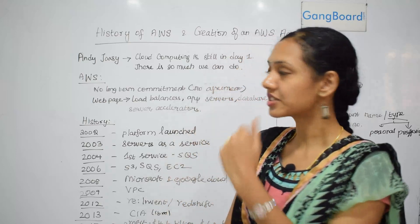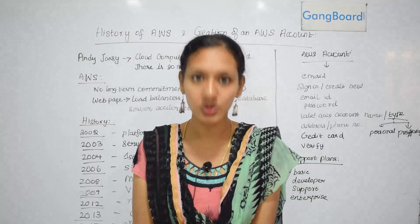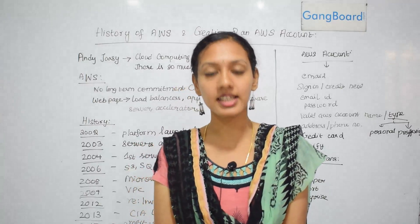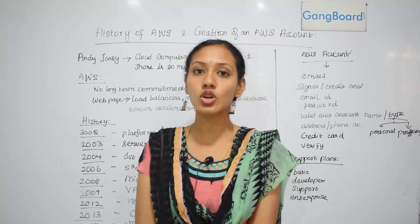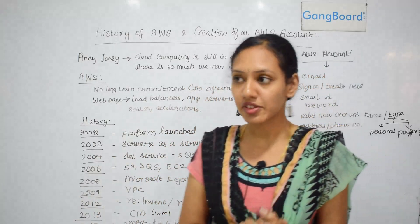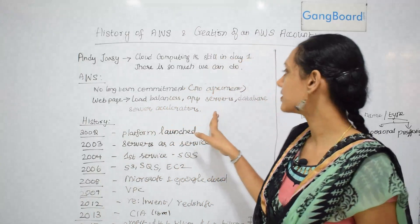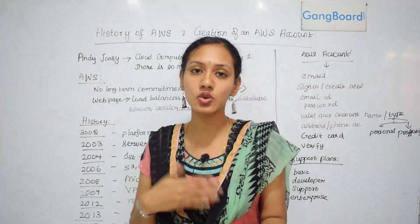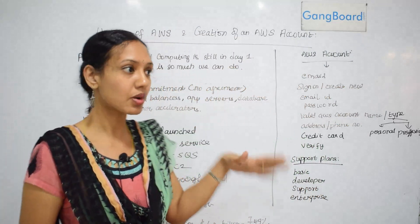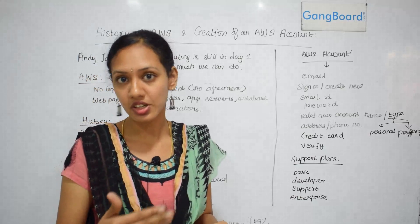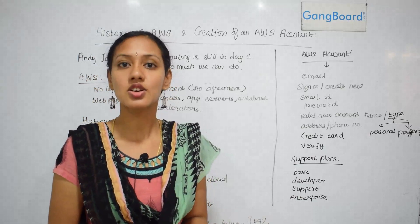What is the history of AWS? Cloud computing is still in day one — there is so much we can do. The person who said this is Andy Jassy, CEO of AWS. In AWS, there is no long-term commitment or agreement. For example, if you want to create a web page, you need load balancers, application servers, database servers, accelerators, and numerous other things. With AWS, there's no commitment — you can use whatever you need and end it once you're done experimenting.